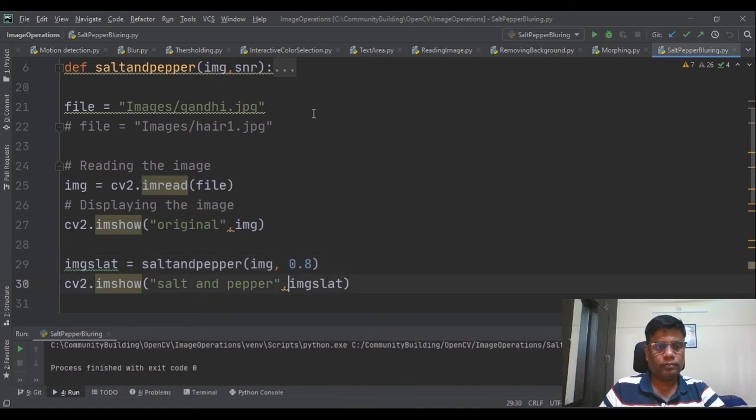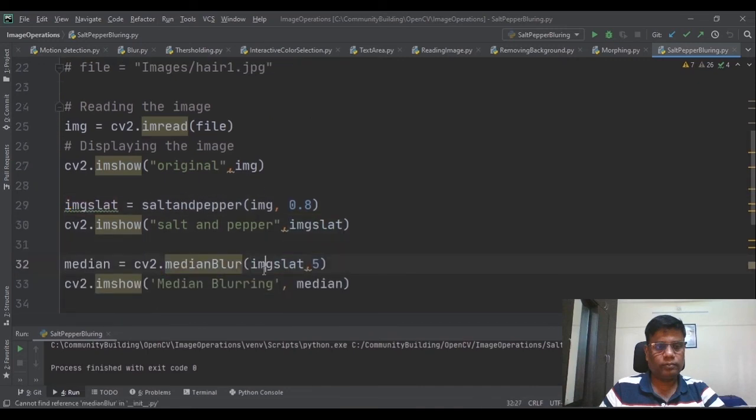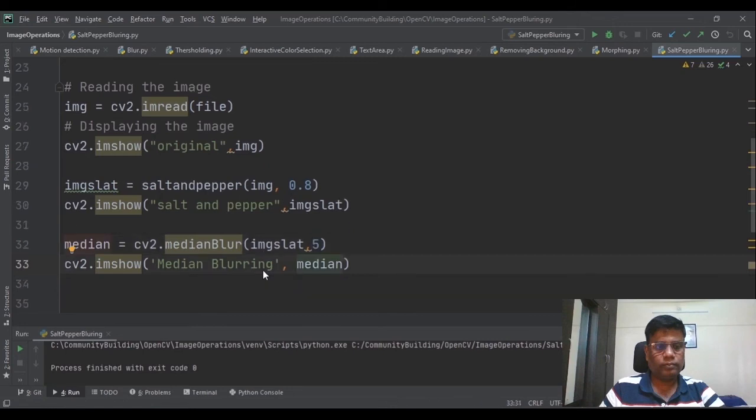Then we will show the salt and peppered image. Median blur takes an input image and then this is the kernel size. The image will be shown after removing the salt and pepper blur.